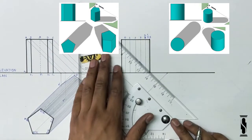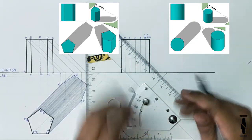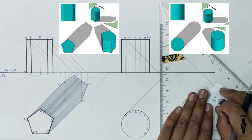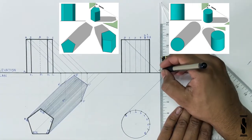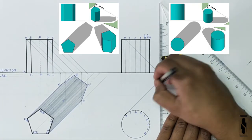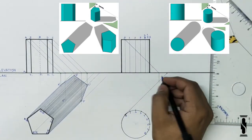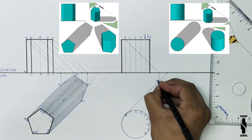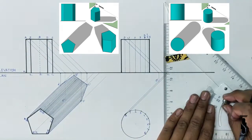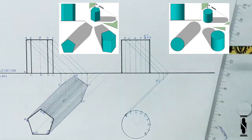Then draw a light ray on point 0 in elevation and extend it to the ground line. In this particular case, the light ray of point 0 in elevation strikes the ground line first, so it will move straight in the horizontal plane. Wherever it strikes the light ray of point 0 in plan, that point will be the shadow of point 0, that is 0 dash. Now repeat the same process for points 1 to 8.